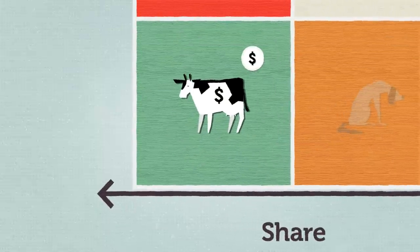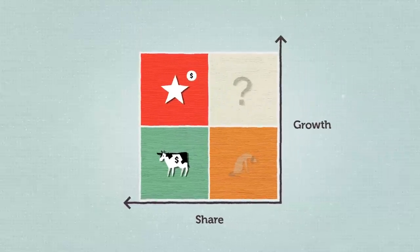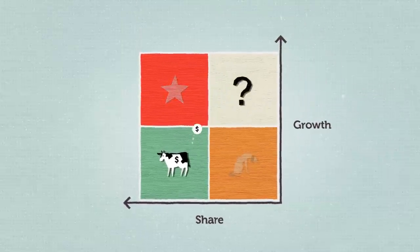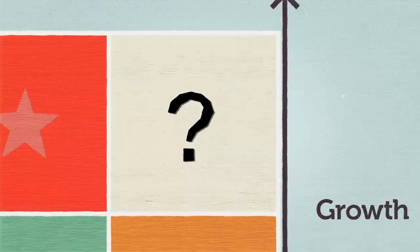Cash cows with high share but low growth were milked to reinvest in high share, high growth stars. Question marks with high growth rates but low share were invested in based on star potential.